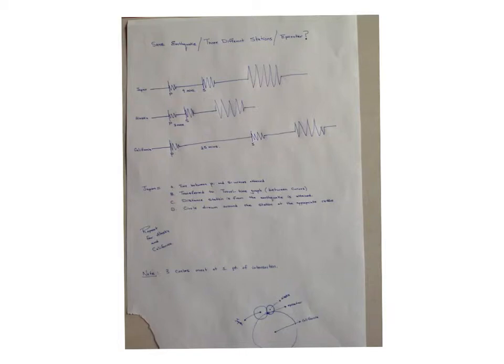So the same earthquake goes off, and seismic waves radiate out in all directions. So what you do is at a particular station, for example Japan, you discover the time when the P wave first arrives, and then you wait, and you discover the time when the S wave arrives.